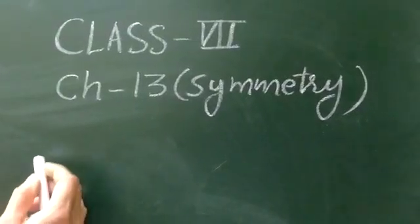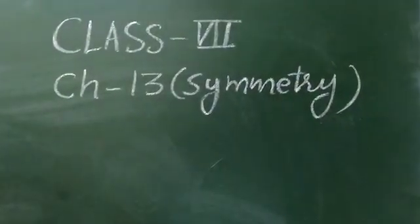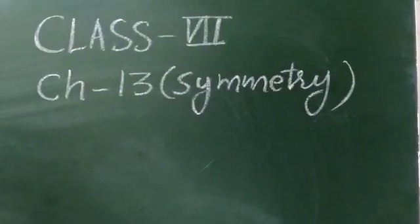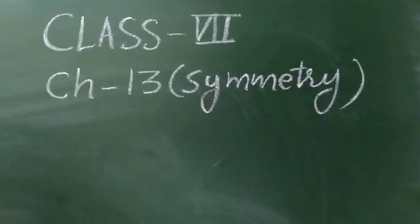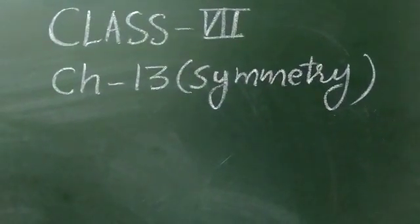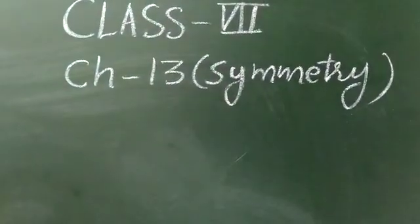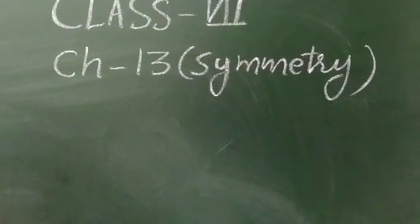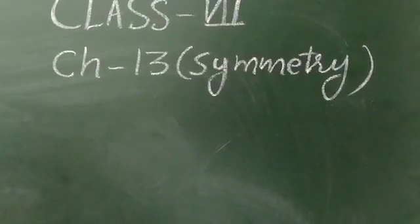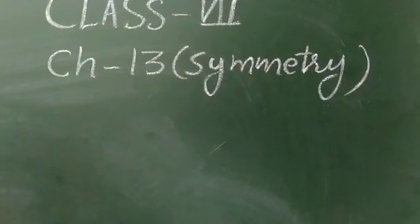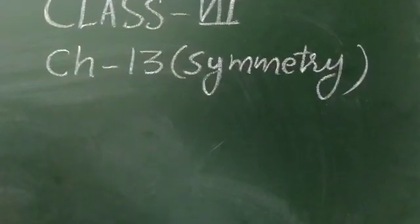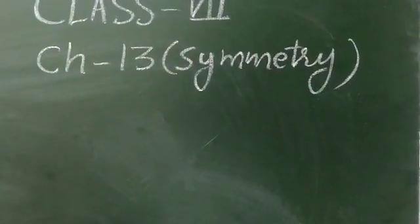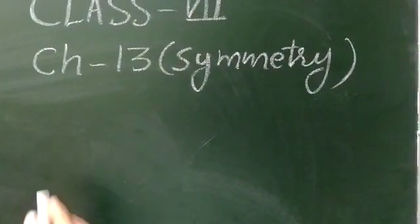Good morning students. Let's start your new chapter, chapter number 13, that is symmetry. So what do you mean by symmetry? A figure is called symmetrical about a line if when it is folded about that particular line, the two parts of the figure coincide with each other.